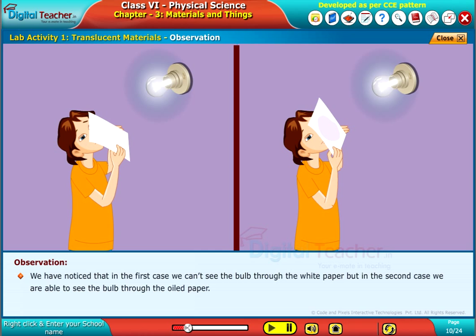We have noticed that in the first case we cannot see the bulb through the white paper, but in the second case we are able to see the bulb through the oiled paper.